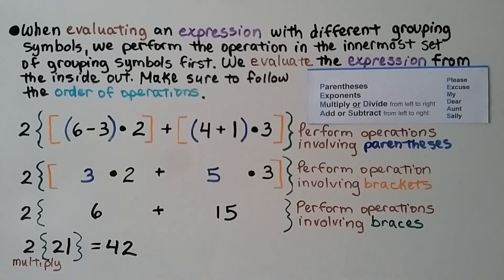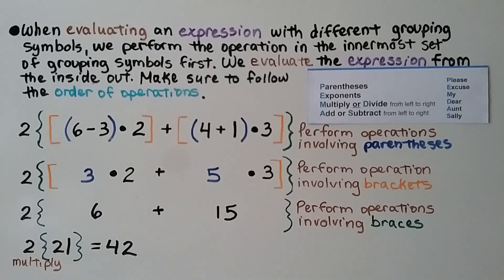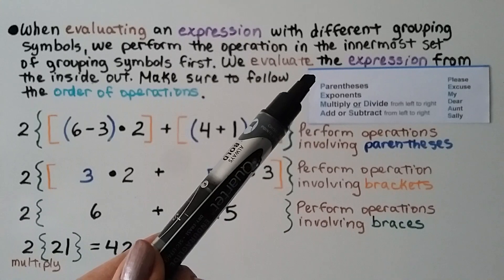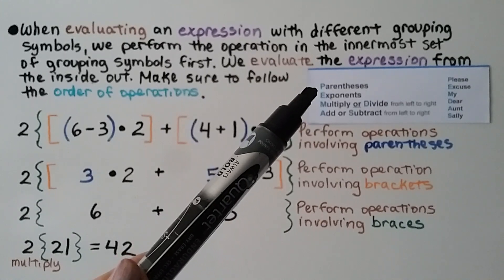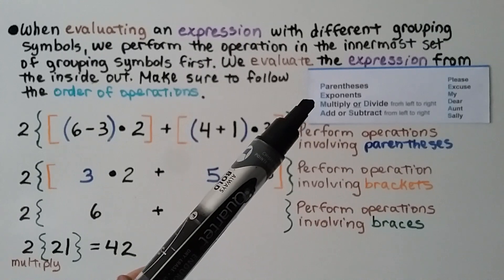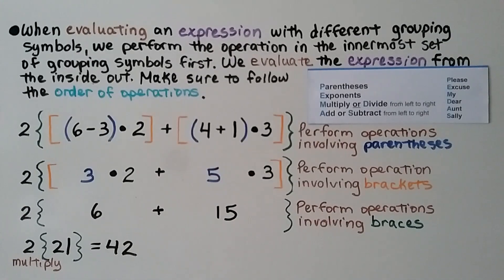When evaluating an expression with different grouping symbols, we perform the operation in the innermost set first — we evaluate from inside out — making sure to follow the order of operations: grouping symbols first, then exponents, then multiply or divide left to right, then add or subtract left to right.